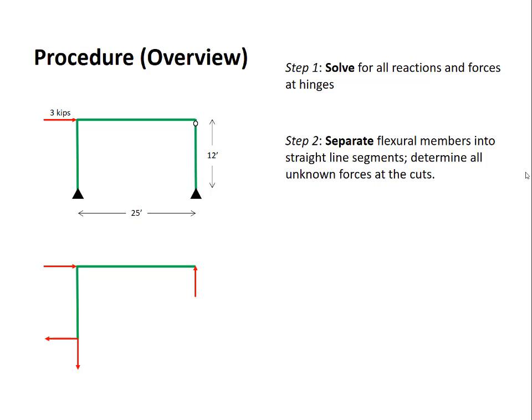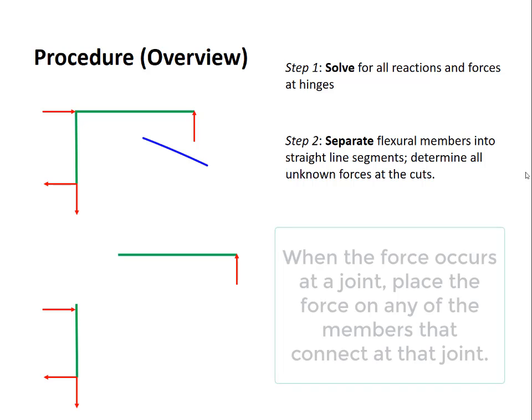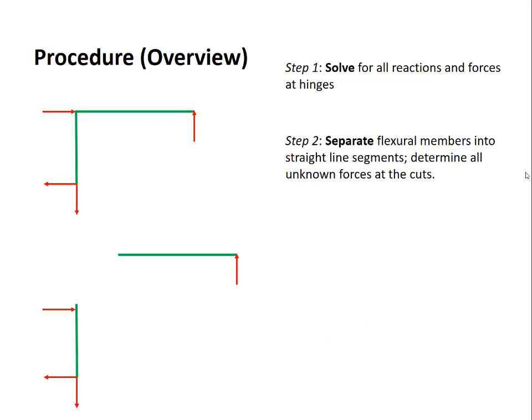Once we have this, step two is to separate all of the flexural members into straight line segments. We'll determine all the unknown forces at the cuts. We repeat the free body diagram and we slice it into two different members. You'll notice that there's a force that occurs right at the end of one of the members. We have a choice. We can place that on either of the two members. Here I've chosen to place it on the vertical member.